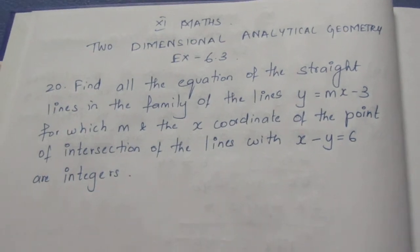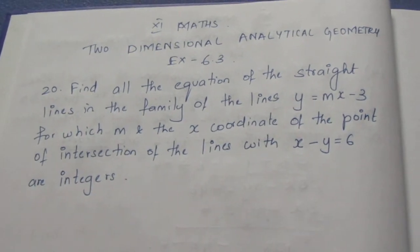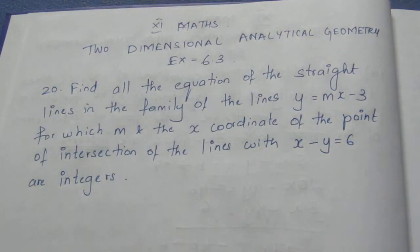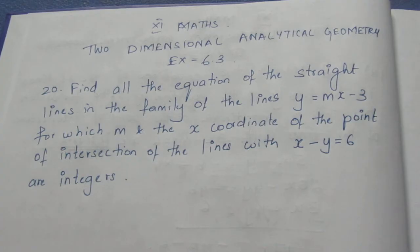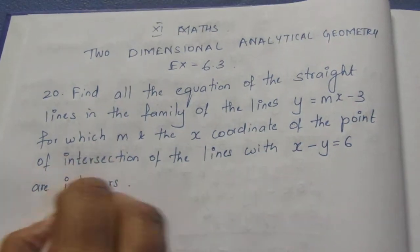Hello viewers, I am Ithli. In the 11th grade 2-dimensional analytical geometry exercise 6.3, problem 20, we will talk about the question: Find all the equations of the straight lines in the family of lines y = mx - 3 for which m and the x-coordinate of the point of intersection of the line with x - y = 6 are integers.